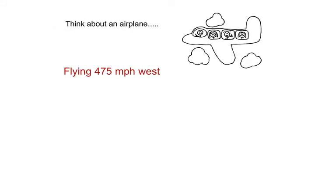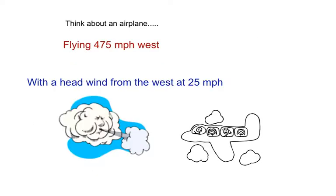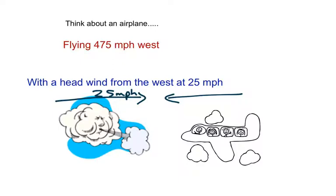If you think about an airplane flying 475 miles per hour west — and we're assuming you know north, south, east, west, so west is that direction — now imagine there is a wind blowing from the opposite direction at 25 miles per hour. What is the wind doing to the plane? It's pushing against the plane, so they're going in opposite directions. The plane has more force, so it's still going in its direction, just slowing down a little bit.